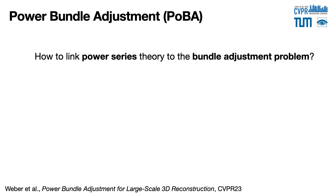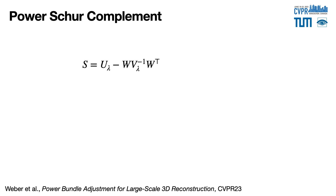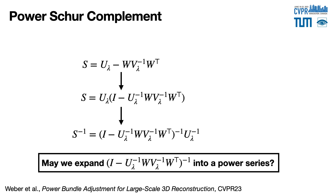We propose to link power series theory and the proposition we initially described to the bundle adjustment problem. The key idea is to expand the inverse Schur complement into a power series. To understand how we can do that, let's have a closer look at the Schur complement S. Let's factorize S with the block matrix corresponding to the pose Jacobian U lambda, and take the inverse of this factorization. The question is whether we may expand the first factor of this factorization into a power series.